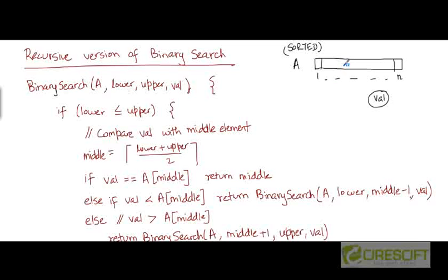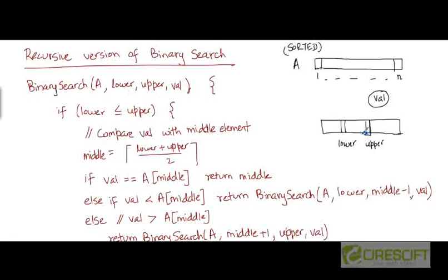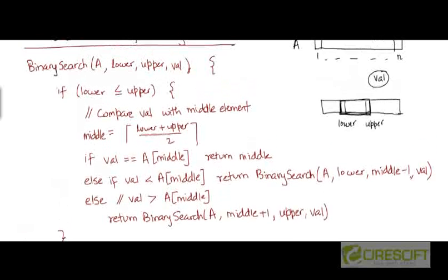At any stage of the algorithm, our search will be constrained to a particular sub-array within the array a, and lower and upper mark off the endpoints of that sub-array. So at any point, we are searching the sub-array starting from lower and going up to upper. When we begin the algorithm, lower will be initialized to 1 and upper will be initialized to n.